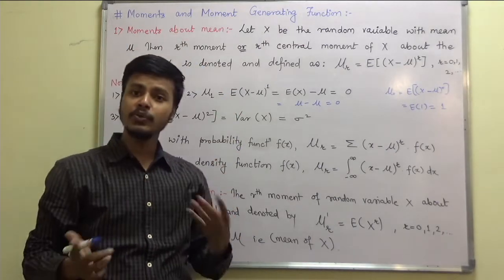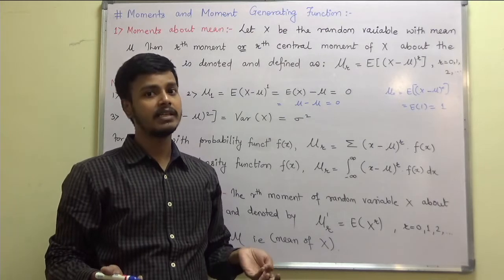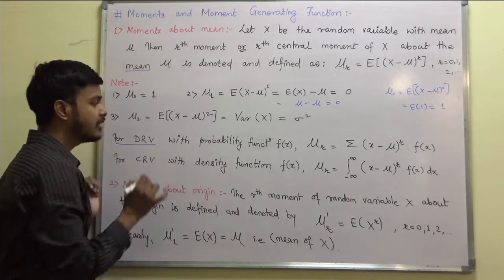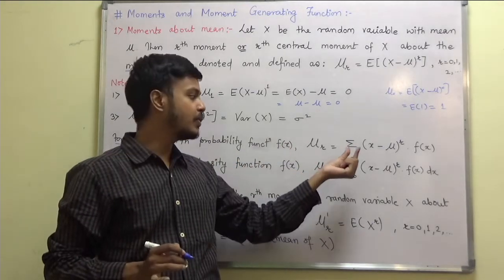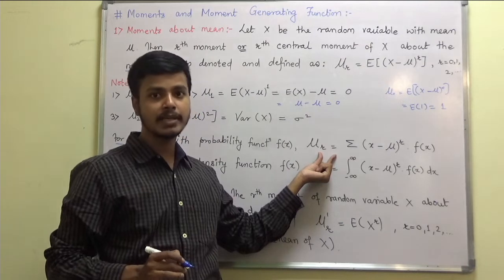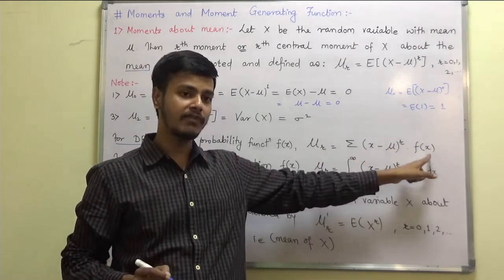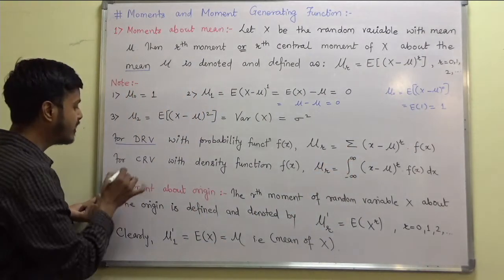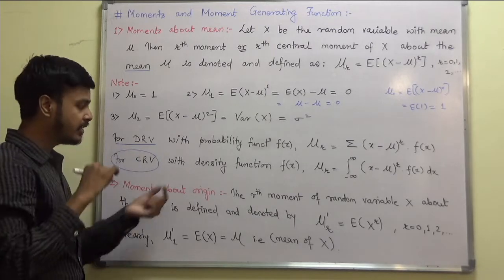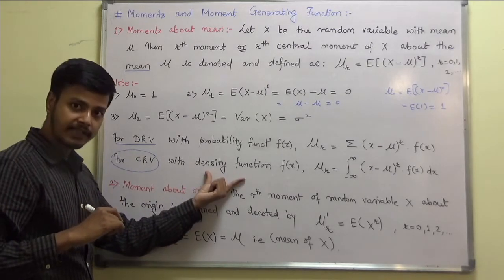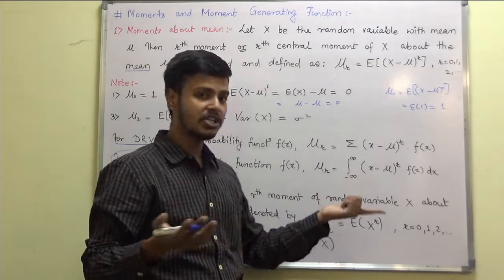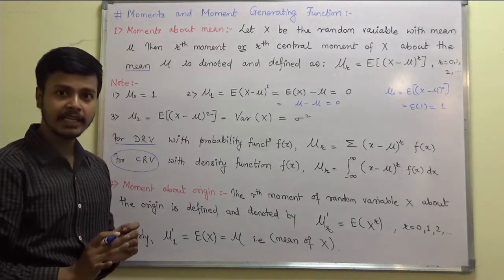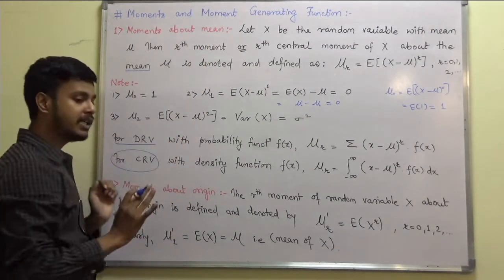We define the moment about the mean for two types of random variables. For a discrete random variable with probability function f(x), mu_r equals summation of (x minus mu)^r times f(x). For a continuous random variable, there is a density function and the summation is replaced by integration: mu_r equals the integral of (x minus mu)^r times f(x) dx.